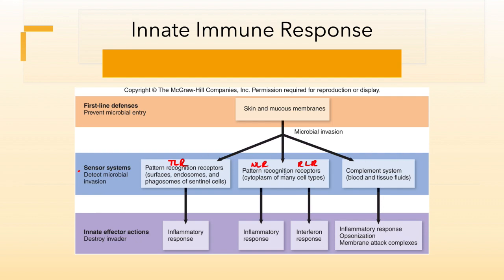Our pattern recognition receptors are specific types of cellular receptors that are found on lots of different types of cells. These have a really important role in activating other types of responses. They are the very early warning system. They recognize pathogen patterns and will tell the immune system that something is going on — so they're the very early, early sensors.